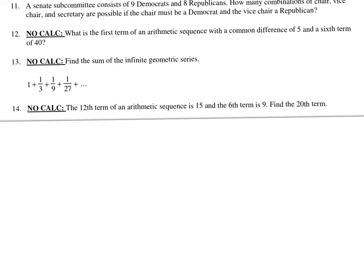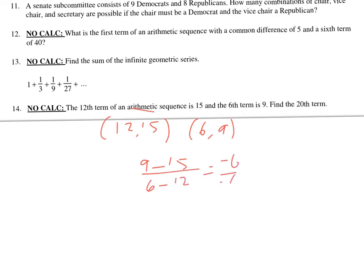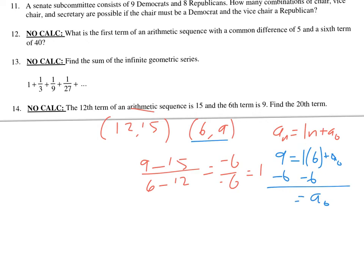For number 14, the 12th term is 15 and the 6th term is 9. I think of these as points and find the slope — that's like finding the common difference since it's arithmetic. So 9 minus 15 over 6 minus 12 gives negative 6 over negative 6, which is 1. So a sub n equals 1n plus a sub 0. Picking one of the points and plugging in, a sub 0 is 3. So a sub n equals n plus 3, and plugging in 20 gives 23.